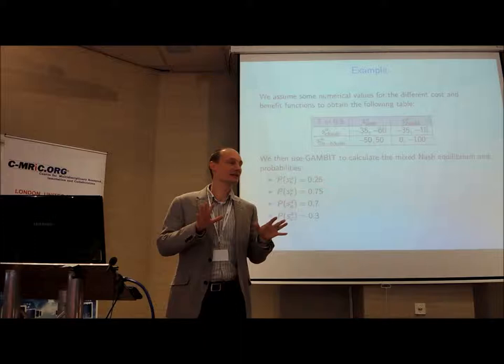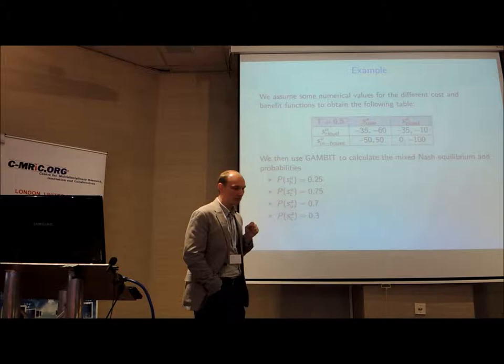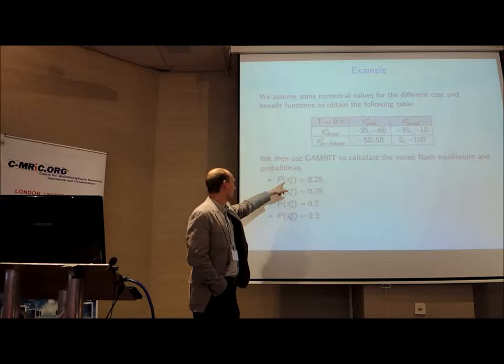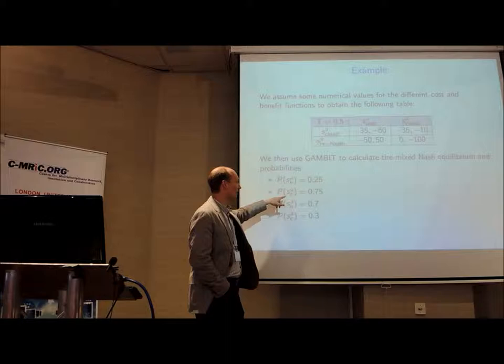And then our model would give you this. And it needs to be explained because now you have these probabilities. Now what does it mean? It would say to the user, it would say with a probability of 0.25 can you please leave your asset on your own system, and with a probability of 0.75 can you put it on the cloud.